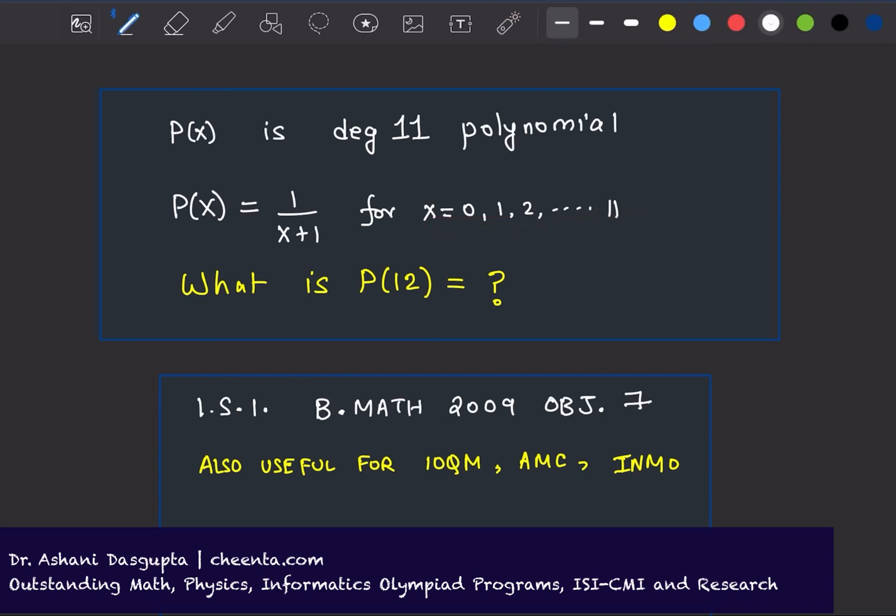It's a degree 11 polynomial, meaning it looks like P(x) equals a_11 x to the power 11 plus a_10 x to the power 10 up to a_0. These are coefficients, real numbers, and the highest power is 11.